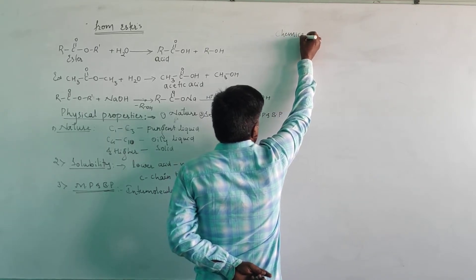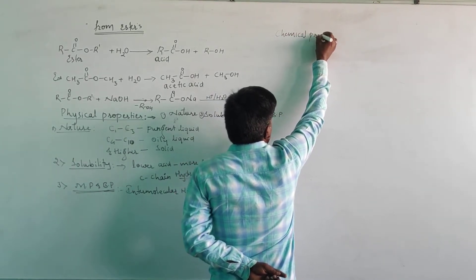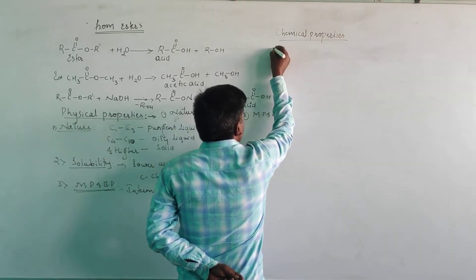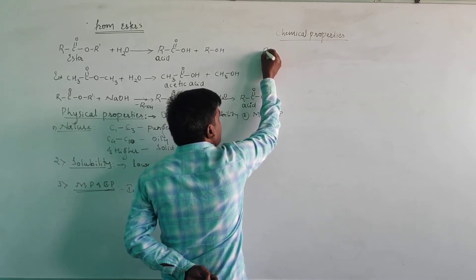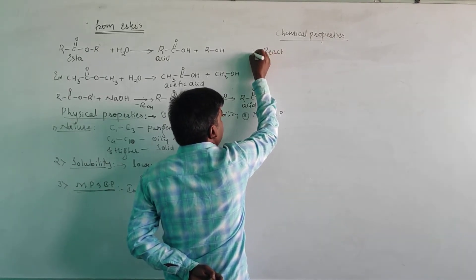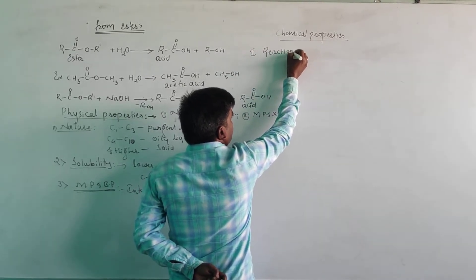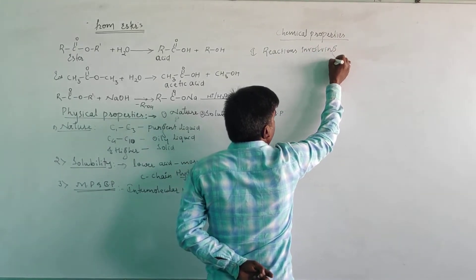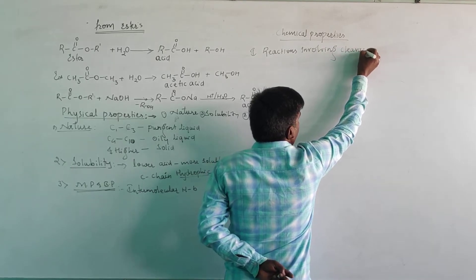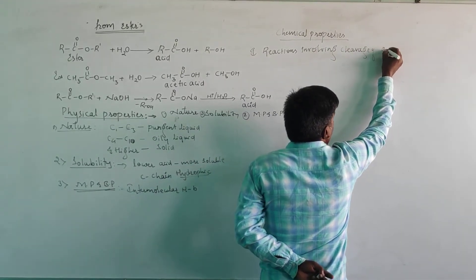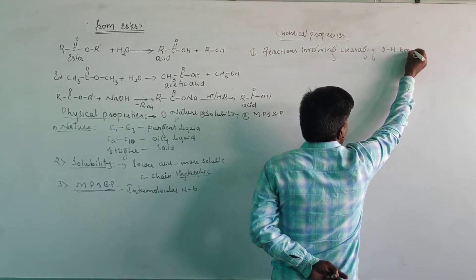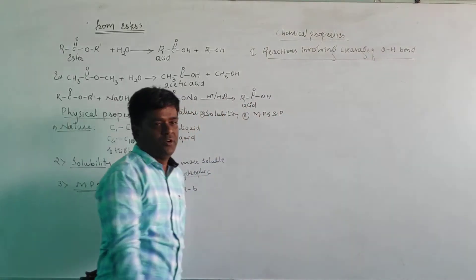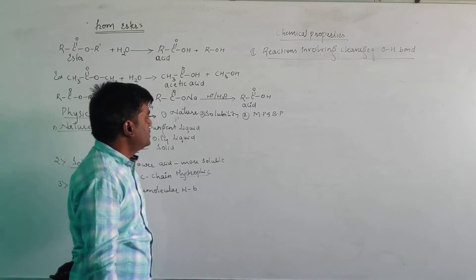Next, we will see the chemical properties of carboxylic acid. In chemical properties, we will see the reactions involving the cleavage of the O-H bond.